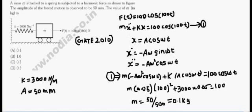Taking the first derivative: x dot equals minus A omega sin(omega t). This is velocity. Taking the second derivative, the acceleration is minus A omega squared cos(omega t).